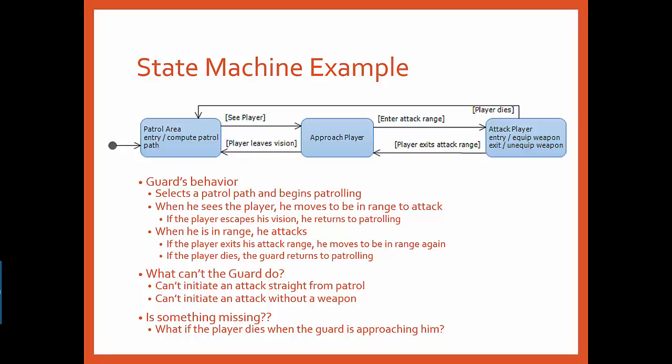If he kills the player, he returns to patrol. If the player leaves his attack range, he unequips his weapon and returns to the approach player state where he chases the player down. If the player at some point escapes the guard's vision, the guard gives up and returns to patrolling.